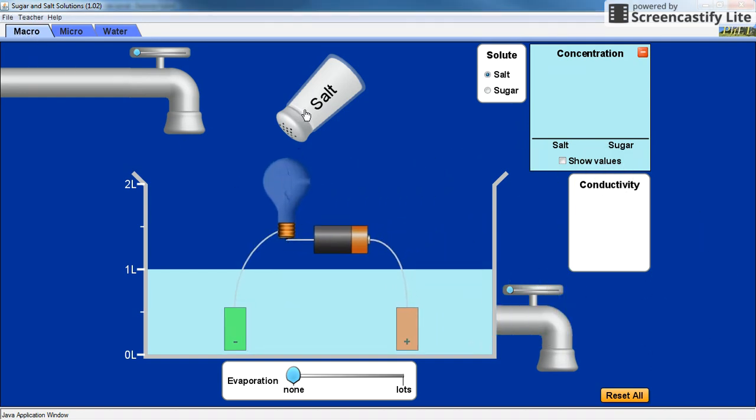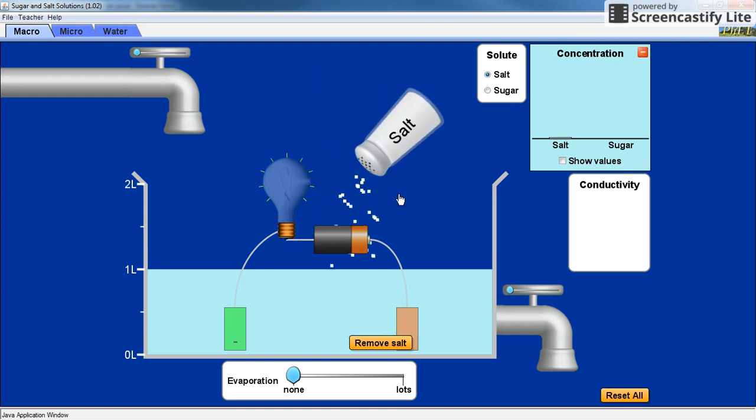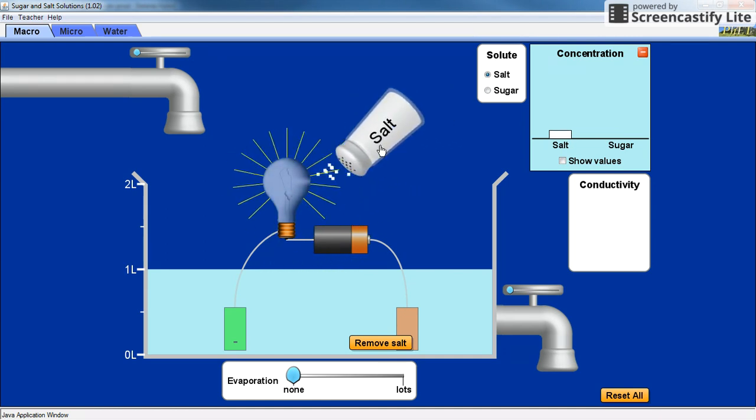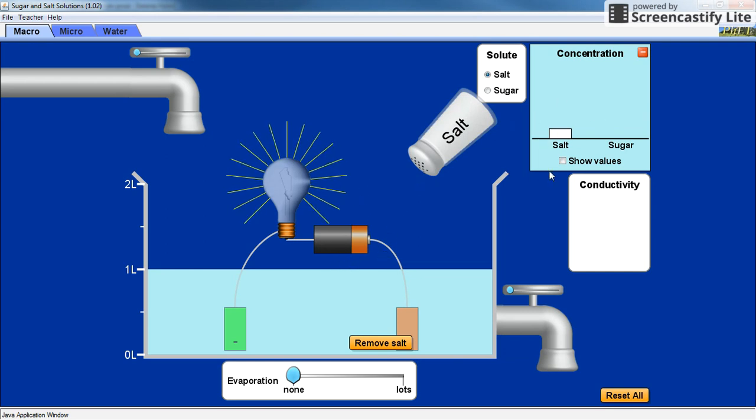Now we'll add salt. Notice as we're adding salt a few things: the salt seems to disappear as we put it in, and notice how the brightness of the light bulb changes as the concentration of the salt increases.